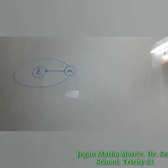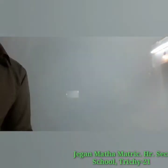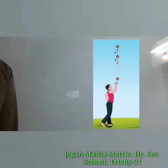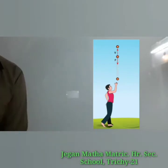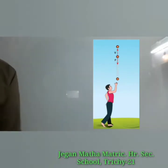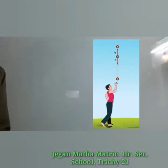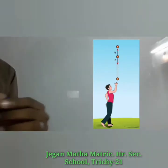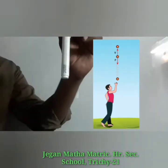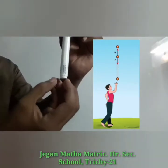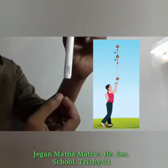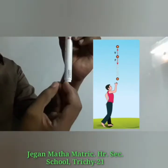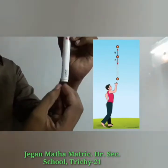Let us take case three: force and motion in opposite directions. Look at the picture. If an object is thrown vertically upwards, the direction of motion is upwards, but the gravitational force acting continuously on the object is downwards.